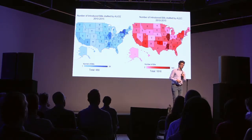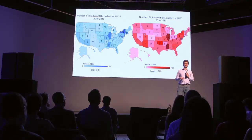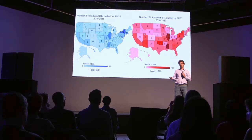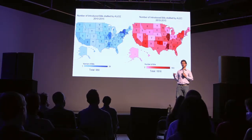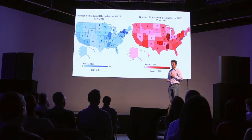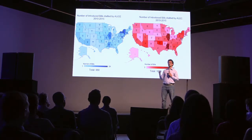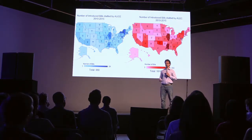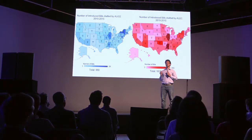So we collected over 1,000 bills from the websites of ALEC, a conservative interest group, and ALIS, a liberal interest group, and fed them into our system, LID. We were able to determine how much success these organizations have had in each state for the past five years.